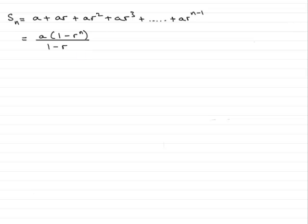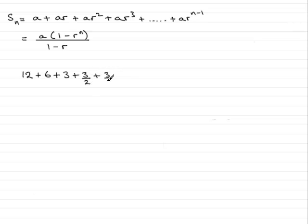So if I had a series where the first term was 12, and I chose to multiply each term by a common ratio of a half, then the next term would be 12 times a half, which is 6. The next term would be 6 times a half, which would be 3, and 3 times a half, which would be 1 and a half, or 3 over 2, and so on. The next term would be 3 over 2 times a half, which would be 3 quarters.